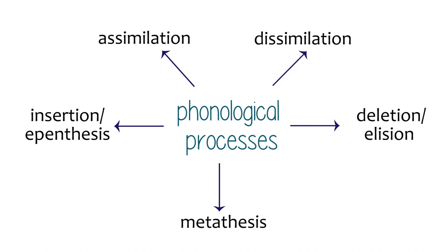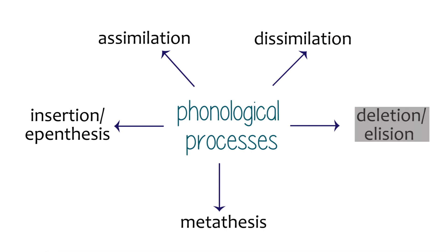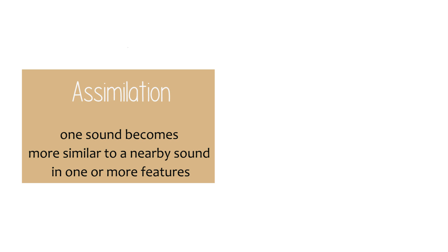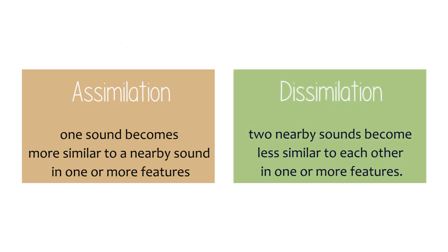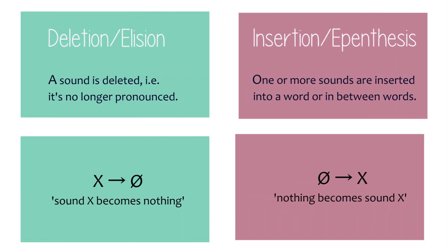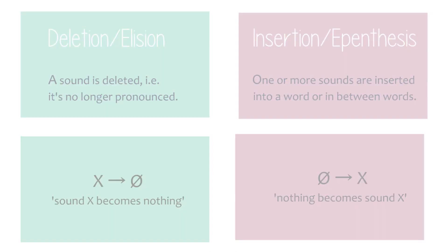We already covered assimilation, dissimilation, deletion (or elision), and insertion (or epenthesis). Assimilation was when two sounds became more similar to each other. Dissimilation is a process by which two sounds become less similar. Deletion is when a sound is dropped, and insertion — the opposite of deletion — is when a sound is added that didn't originally exist.